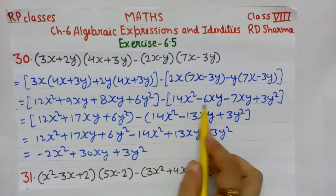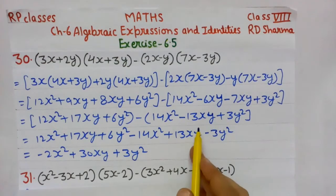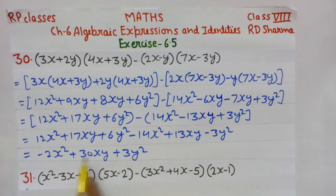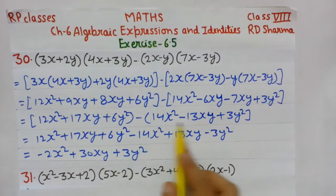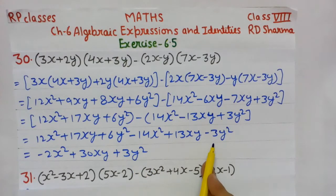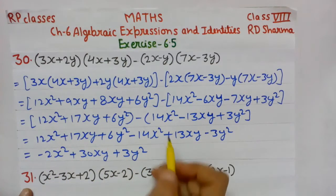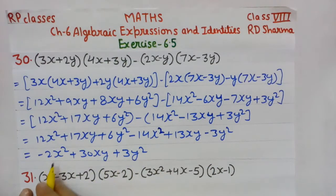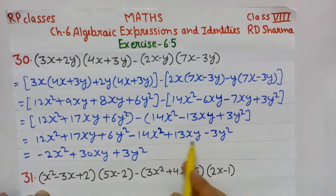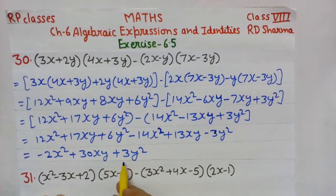Now bracket is opened: there is a minus before the bracket, so the entire bracket's sign changes. It becomes minus 14x², plus 13xy, minus 3y². Now solving like terms again: 12x² − 14x² = −2x². 17xy + 13xy = 30xy. 6y² − 3y² = 3y². Answer: −2x² + 30xy + 3y².